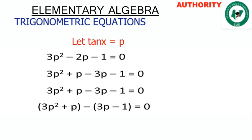For factorization, we take the coefficient of p² which is 3, multiplied by c which is minus 1, giving minus 3. We ask: what two numbers add to minus 2 and multiply to minus 3? The answer is 1 and minus 3, since 1 + (−3) = −2 and 1 × (−3) = −3.